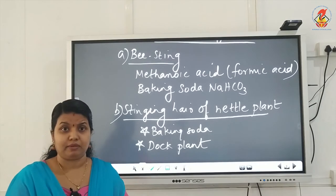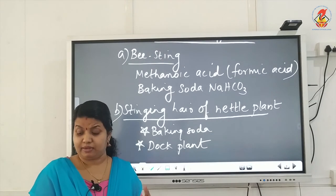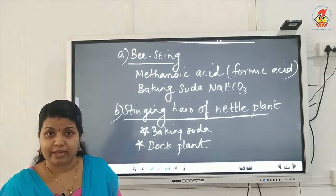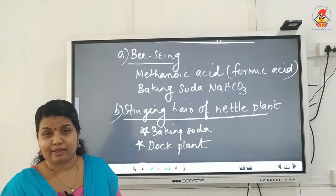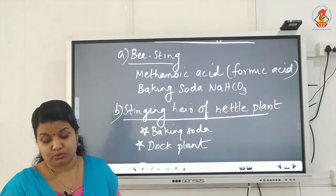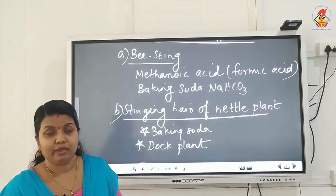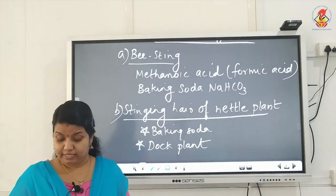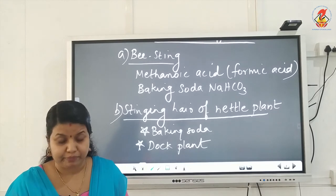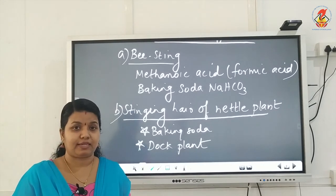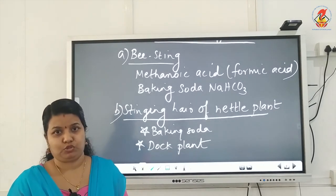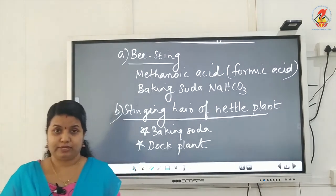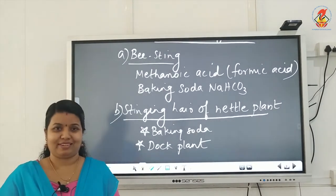The same table you have learned in 7th standard — it was a little bigger then with more substances. Here also, you have to learn the names of the acids; only acids are listed here whereas in 7th you learned bases also. Learn table 2.3 from page number 28 of your NCERT science textbook. That's all for today's class.